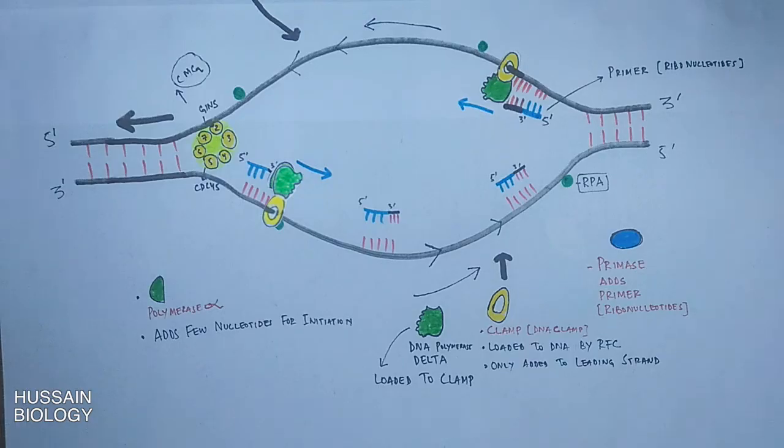And we know both strands are going opposite in their directions. One is going 5 prime to 3 prime end, the other one is going 3 prime to 5 prime end. So on one strand the DNA polymerase will synthesize continuously and on the other it will synthesize in segments or fragments called the Okazaki fragments.